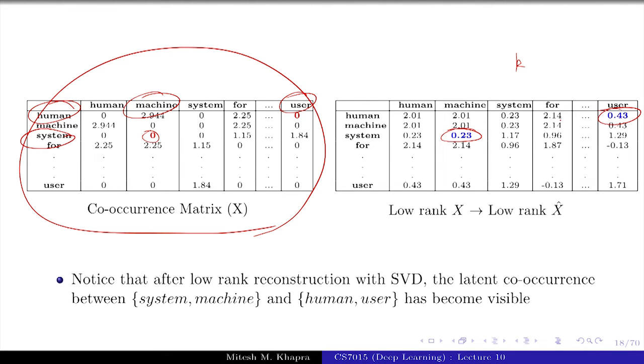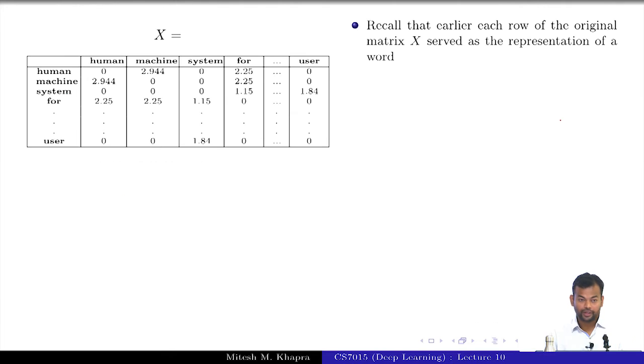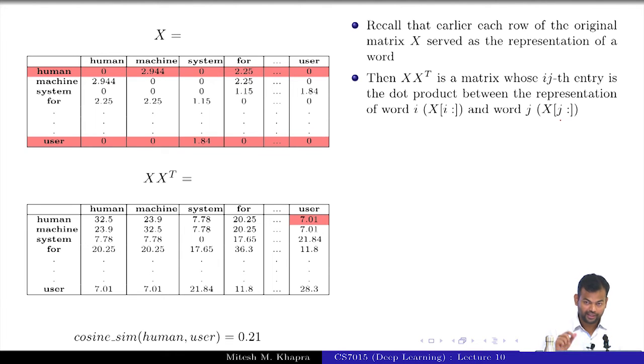After SVD, you could have negative values, that is not necessary that it should be positive. In the original matrix, you don't have negative entries. Here is a question. Recall that earlier, each row of the original matrix X served as the representation of a word. This was my original X_PPMI, not the rank approximation. Now in that case, what would X*X^T give me? What would the i,j-th entry of X*X^T be?